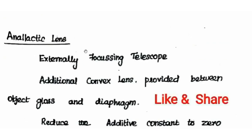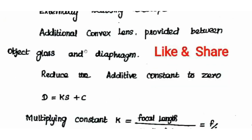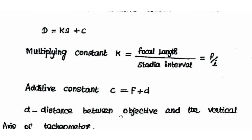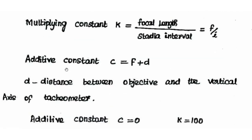The additive constant C = F + D, where F is the focal length and D is the distance between the optical center of the objective and the vertical axis of the tachometer. When we fit a convex lens between the object glass and diaphragm, and set it at the vertical axis focus, the additive constant value becomes 0.